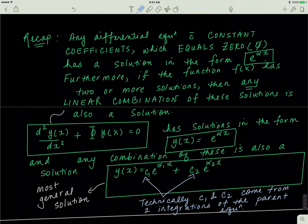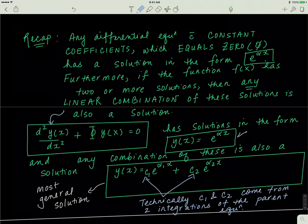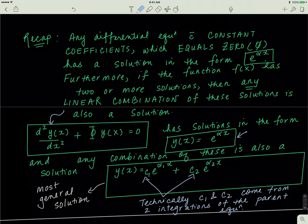Our parent equation was a differential equation in this form. So any differential equation in this form has a solution in the form of y equals e to the exponent alpha x. But the most important point to remember is that this isn't the most general solution. The most general solution is actually a linear combination of all of the solutions y of x has. So if this is a second-order differential, you'll get two solutions, and the most general solution will be a linear combination of both.